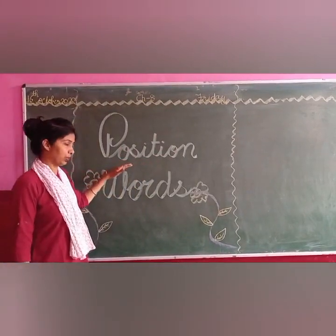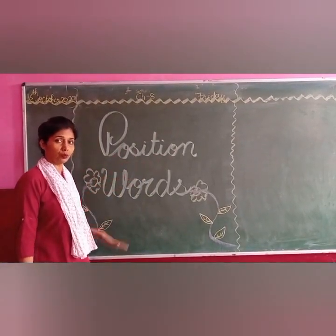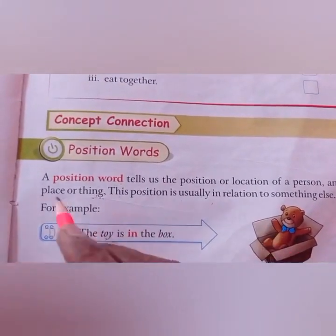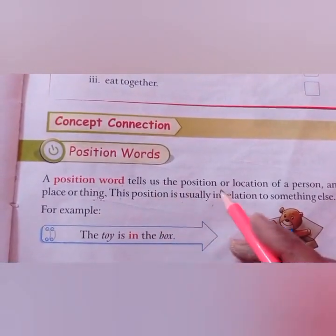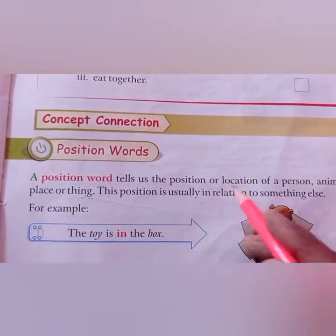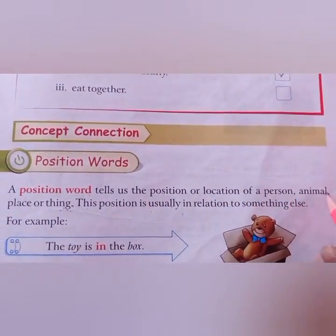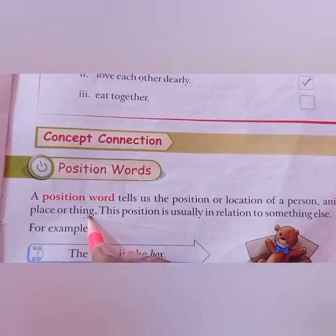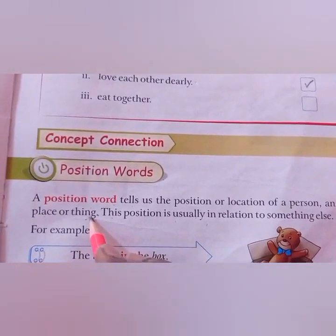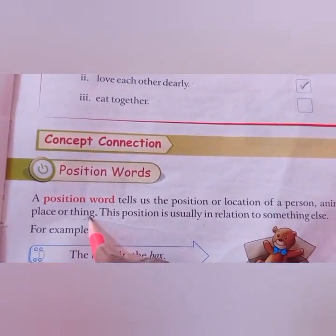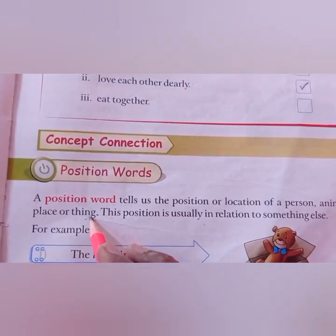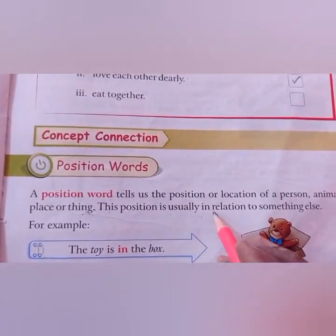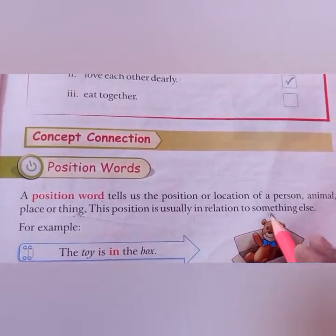What is a position word? Today we will learn what is a position word. A position word tells us the position or location of a person, animal, place, or thing. Position words tell where anything or any person is. This position is usually in relation to something else.